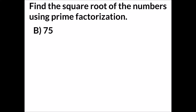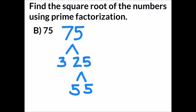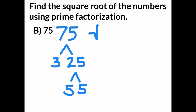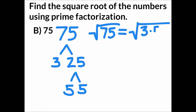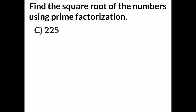The second example asks us to find the square root of 75 using prime factorization. We start by doing the prime factor tree: 75 can be factored into 3 and 25, and 25 can be factored into 5 and 5. So the square root of 75 equals the square root of 3 times 5 times 5. We cannot write those as identical number pairs, so the square root of 75 is not a whole number.